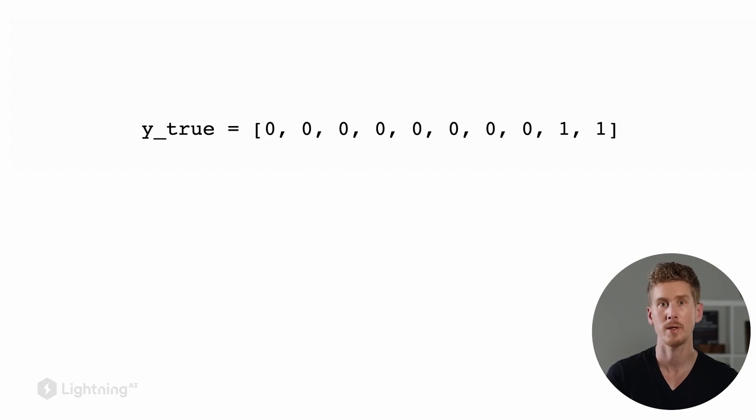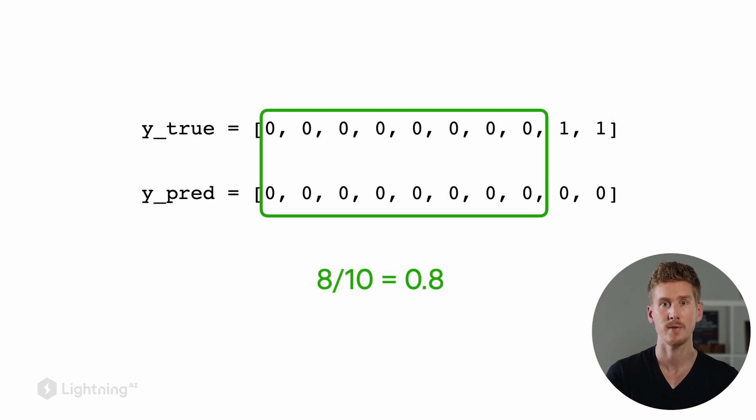So here at the top, we now have a dataset where we have eight labels 0 and two labels 1. So here, the class label 0 is overrepresented in our dataset. So even if our model doesn't do anything useful and always outputs 0, in this case, we would actually measure a classification accuracy of 0.8, or 80%. 80% in certain contexts can sound high or large.